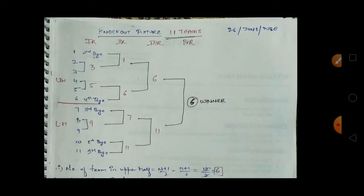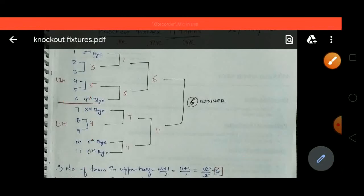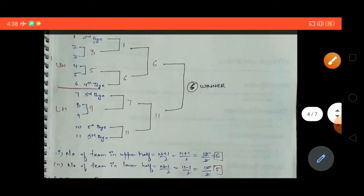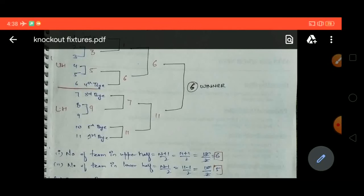Now let's look at a knockout fixture of 11 teams. We have 11 teams — first, write all 11 teams in serial order. Then divide into upper half and lower half. Since 11 is odd, the formula for upper half is (n+1)/2, which is 12/2 = 6 teams. For lower half, the formula is (n−1)/2, which is 10/2 = 5 teams.